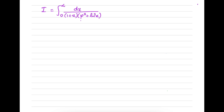How to begin? First, let us take a u-substitution. I am going to take x equal to 1 over u. To find dx we differentiate both sides, so dx is equal to minus 1 over u squared du.